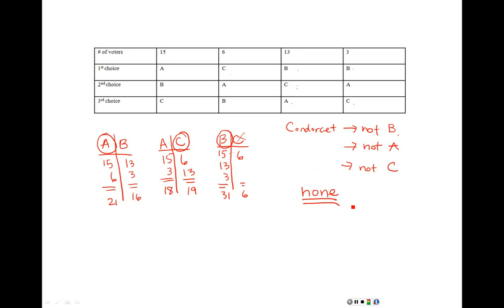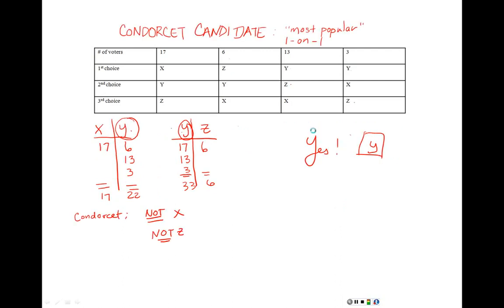Why do we even care? If there is a most popular candidate — someone who wins every one-on-one matchup against each other candidate — it seems unfair if they don't win the election. And yet that can happen. Going back to the XYZ example: Y was the most popular candidate one-on-one, but X won the election under plurality. That's a problem with the plurality method — the fact that this can even happen means it's a flawed system.